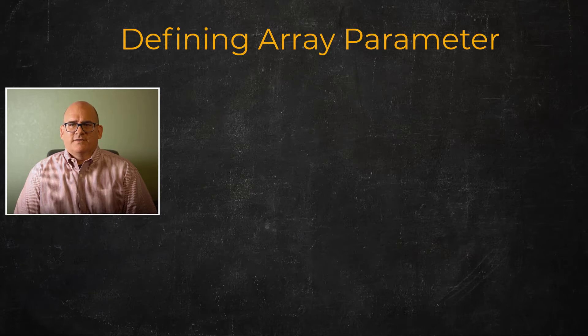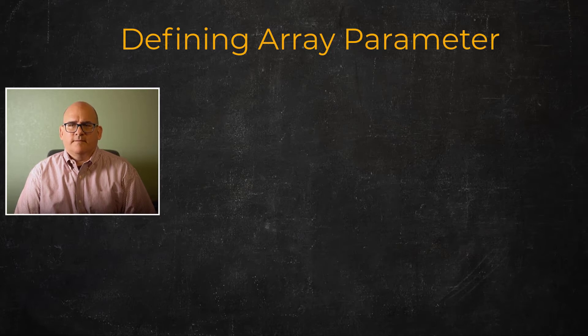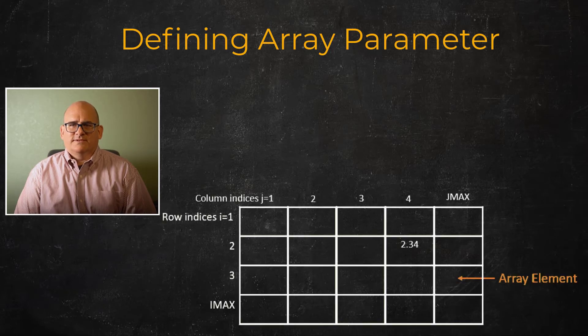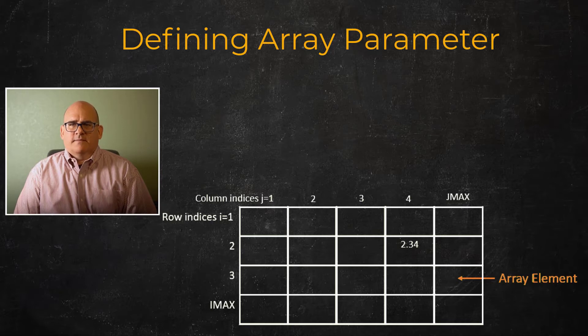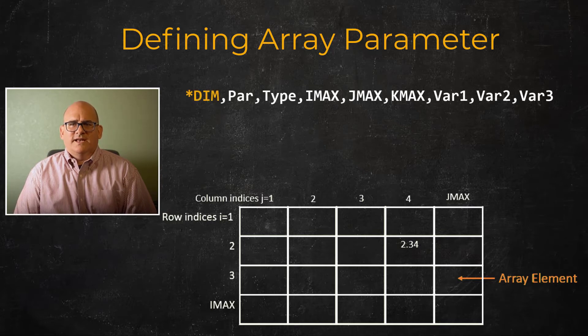Like scalar parameters, there are two basic types of arrays: those that hold numeric and those that hold alphanumeric data. Here we will concentrate on those that hold numeric data. We can further divide arrays that hold numeric data into arrays and tables. The rows, columns, and planes of an array are given by the indices i, j, and k, and each location of an array is called an element of the array.